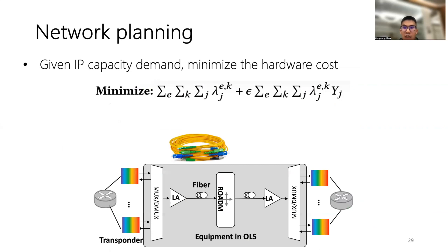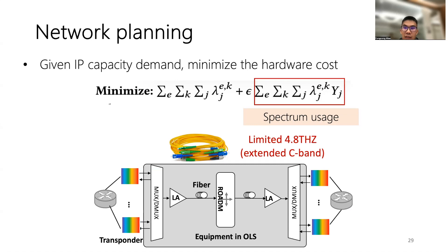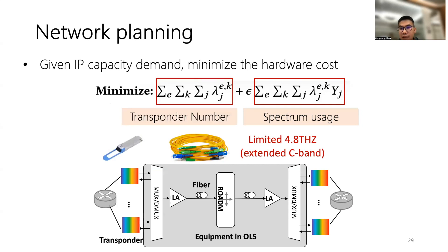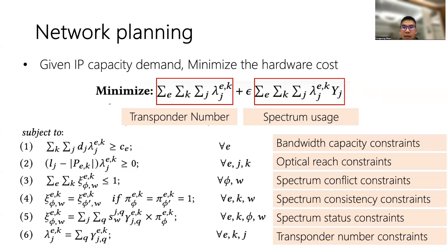The flexibility at the optical layer introduces new challenges for cloud providers to create a cost-effective planning strategy. Although providers have existing fiber and OLS equipment deployed, reducing spectrum usage in the fiber is equivalent to saving hardware cost, since total spectrum for long-haul transmission is limited. The marginal cost of provisioned capacity is dominated by extra transponders. FlexiOne formulates the WAN capacity provisioning problem with the goal of minimizing hardware cost, subject to constraints including bandwidth capacity, optical reach, and spectrum conflict constraints.